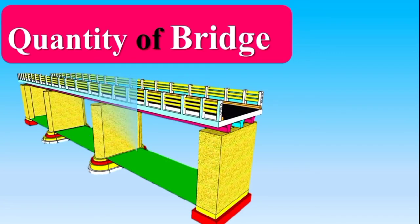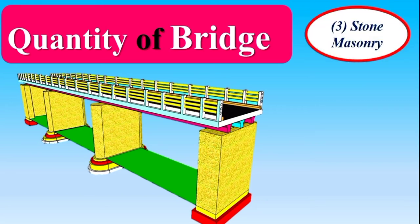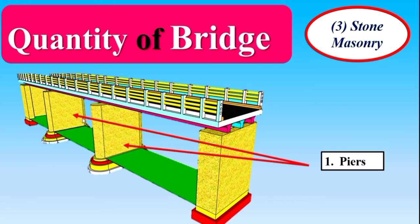Assalamualaikum dear students. In this video I am going to continue my previous topic on quantity average. As you can see, we have a bridge. In the previous lecture we calculated the quantity of excavation and quantity of PCC. Today we will calculate the quantity of stone masonry. The abutment wall, wing wall, and piers of this bridge are made of stone masonry.